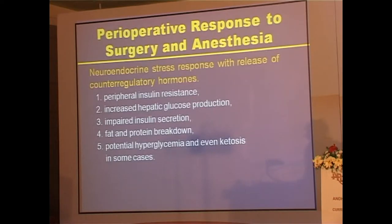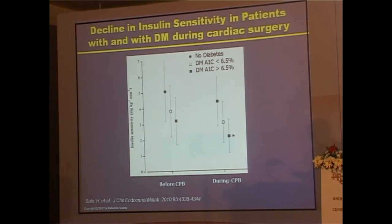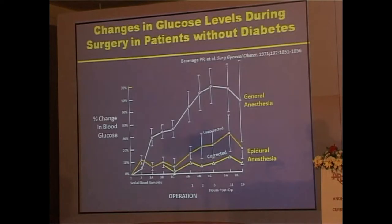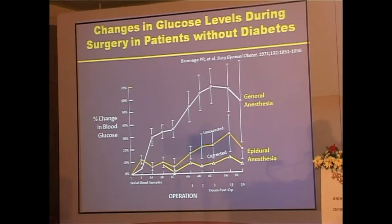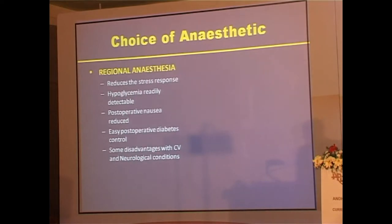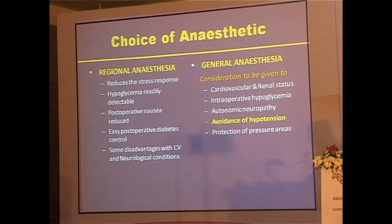Perioperatively there is significant neuroendocrine stress response: peripheral insulin resistance, increased hepatic glucose production, beta-cell dysfunction, protein and fat breakdown, and potential hyperglycemia or even ketosis. A JCM 2010 paper by Sato et al. on cardiac surgery showed a clear decline in insulin sensitivity. Blood glucose levels spike markedly under general anesthesia compared to epidural anesthesia, demonstrating that the type of anesthesia matters significantly.